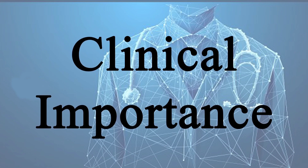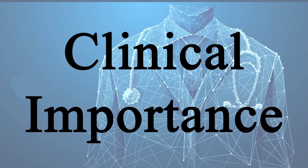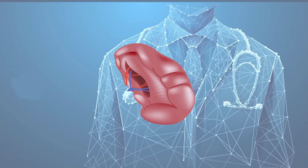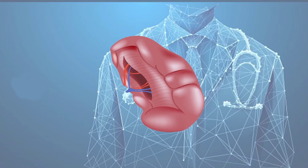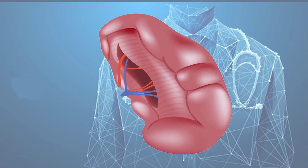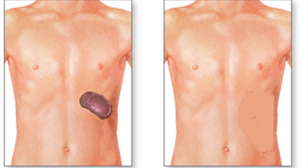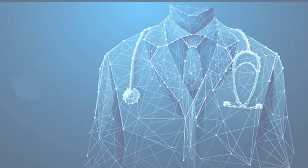Regarding the clinical importance of the spleen: the spleen is generally not palpable and must be enlarged 2–3 times its normal size to become palpable. Splenomegaly means an enlarged spleen. Asplenia refers to the condition where the spleen is absent. Hyposplenia refers to reduced splenic function.